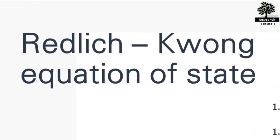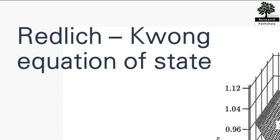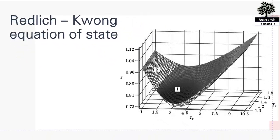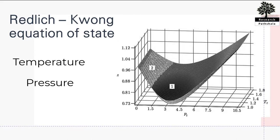In physics and thermodynamics, the Redlich-Kwong equation of state is an empirical algebraic equation that relates temperature, pressure, and volume of gases. It is generally more accurate than the van der Waals equation and the ideal gas equation at temperatures above the critical temperature.